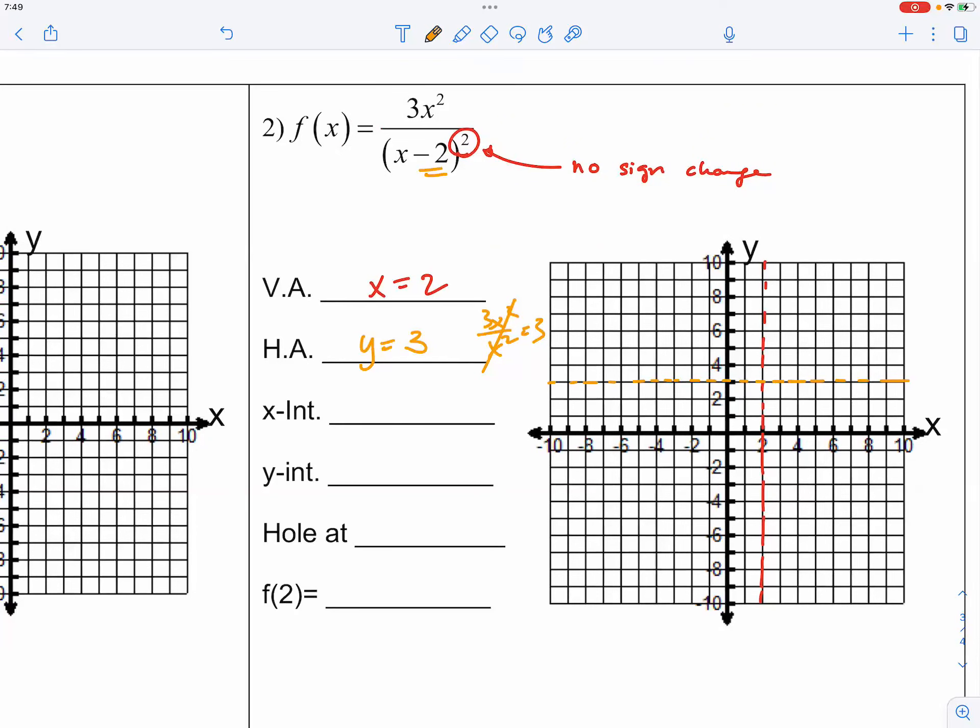And then we look at the x intercept and the y intercept. Well, the x intercept is to think about the fraction being 0, which means the numerator must be 0. What x value would cause the numerator to be 0? That would be 0, 0. And then what about the y intercept? Well, if the x intercept is 0, 0, the y intercept would automatically be 0, 0.